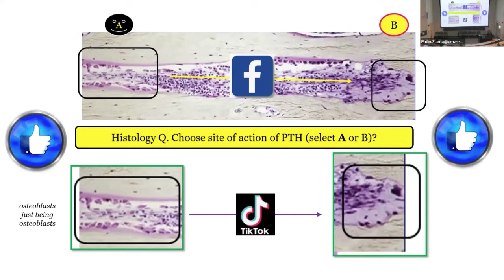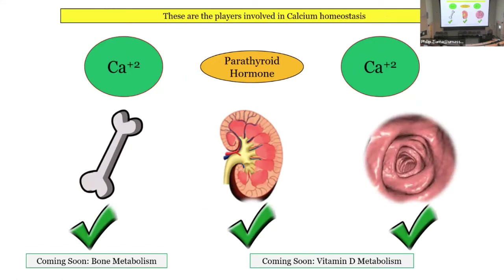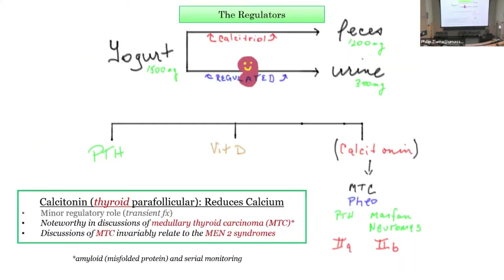That's the people involved in calcium homeostasis: parathyroid, with effects on bone, kidney, and intestine, and the relation to vitamin D.